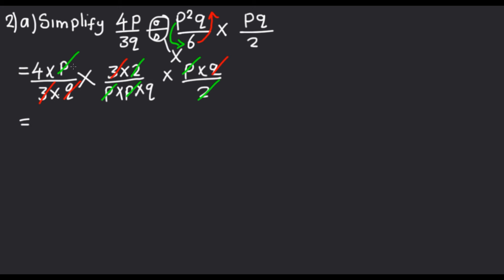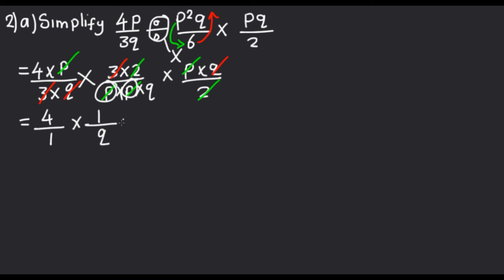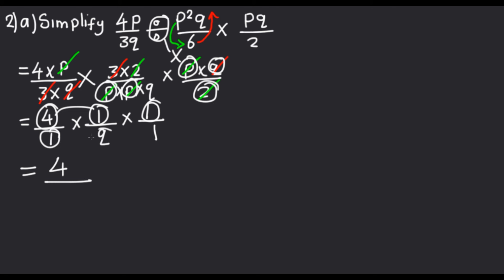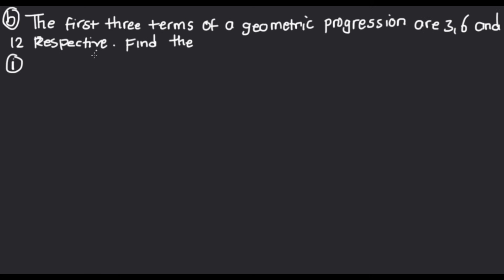Now let's check what remains. From the first fraction on top, the P is gone, so we have 4. We cancelled every term in one spot, so that becomes 1 — whenever everything is cancelled, just a 1 remains. The 3 and 2 are gone, leaving 1; P is gone, P is gone, leaving only Q; and the other P and Q are gone, giving 1 over 1. So we have 4 times 1 times 1 which is just 4, over Q times Q which is Q squared. That's our final answer.